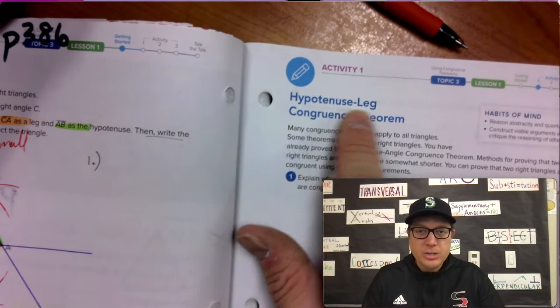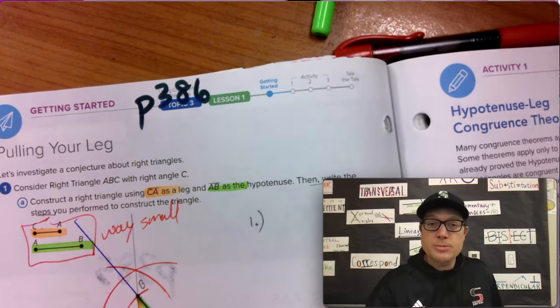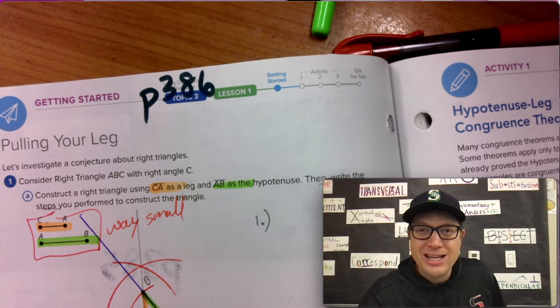Page 387, the hypotenuse leg congruence theorem. Thank you for watching this video. Like, comment, and subscribe. See you on page 387. Bye.